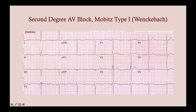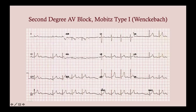Here's another Wenckebach example — you can see the drop occurs almost every other beat. And in another example, you have four beats and then a drop. Notice the PR interval gets longer and longer and longer, and then you have a drop.